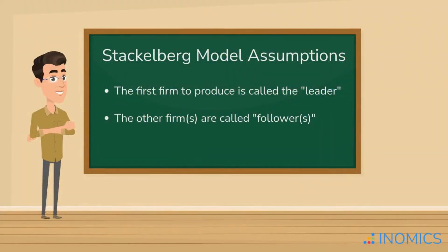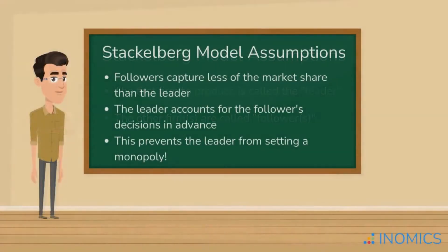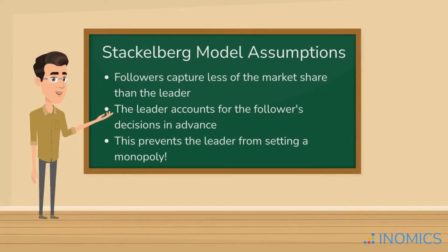However, the leader can't just produce the monopoly quantity, because the follower can still produce just a few units, lowering the market price slightly, but getting a positive profit. If the follower does this, it causes the leader's choice of monopoly quantity to be suboptimal.